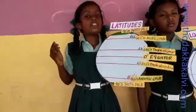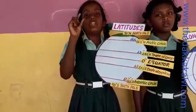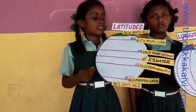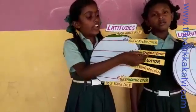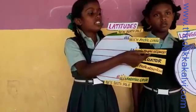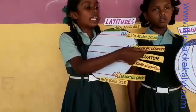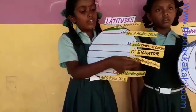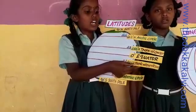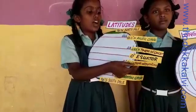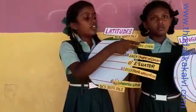Latitudes are measured with unique degrees. 23.5 degrees north is called the Tropic of Cancer. 23.5 degrees south is called the Tropic of Capricorn.